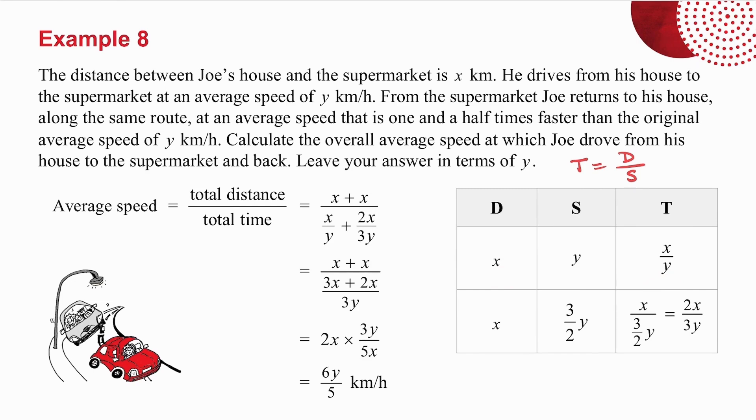Right, let's keep going. From the supermarket, Joe returns to his house along the same route. Which means the distance going back is also x. At an average speed, one and a half times faster than y. So his speed now is 3 over 2y. One and a half times y.